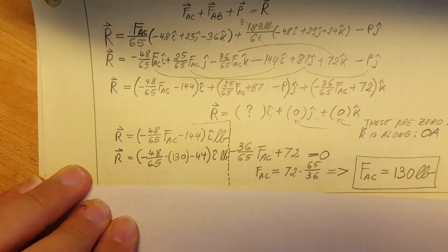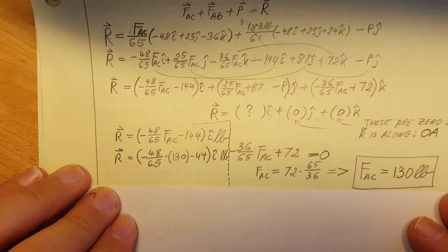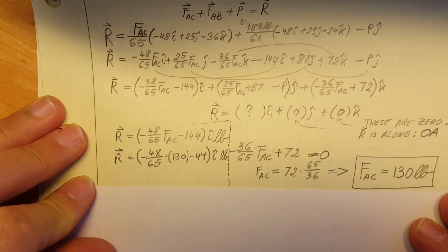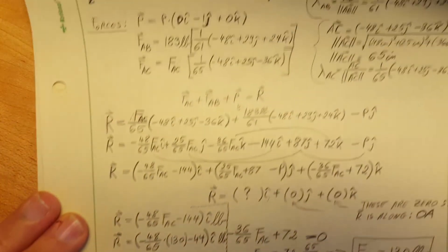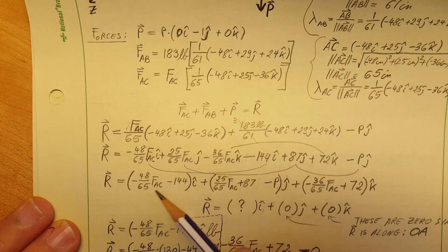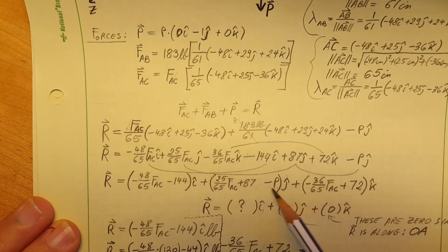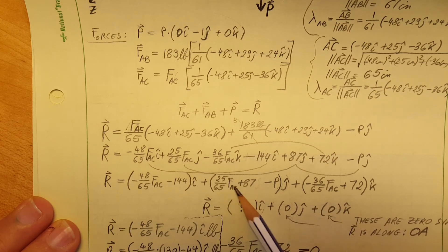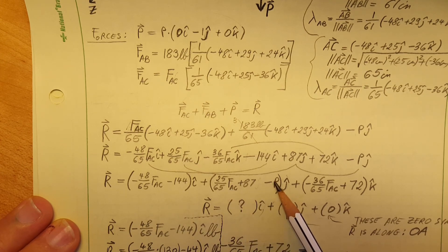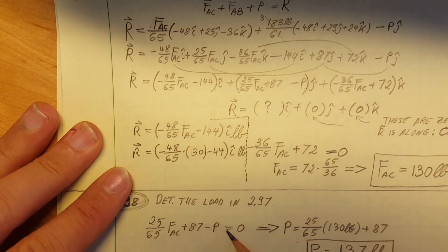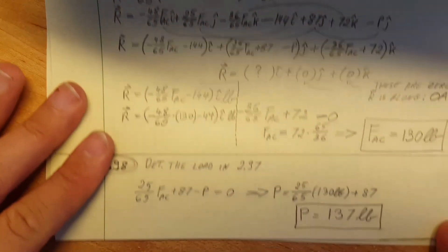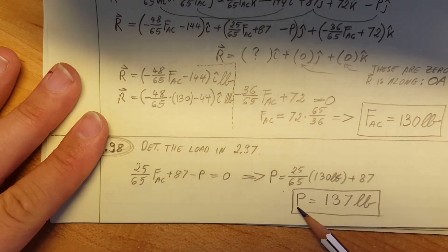Now this was problem 97, and 98 is directly connected to this. All it's asking for us to find is P. P we're gonna find from this equation where we found our R. We're gonna come back to the middle, the j part. Here we had two unknowns, but since we found FAC, now we have only one unknown and that one is our P. That is perfect. So we're gonna bring it down here, put it equal to 0 and solve. Plug in for FAC, solve for P, and there you go. We have 137 pounds for P.